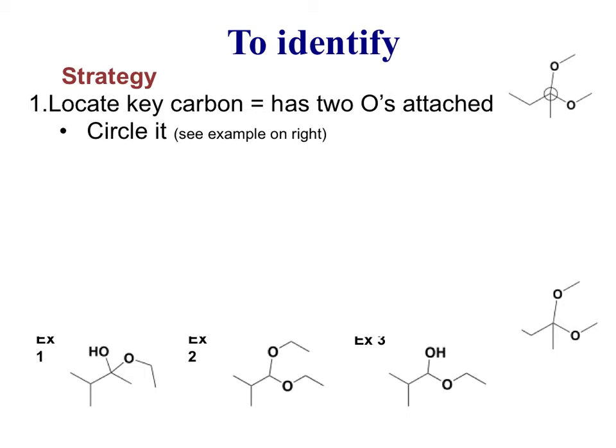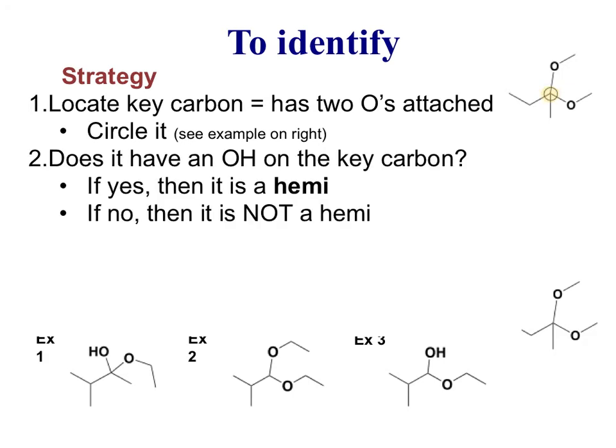This is the basic strategy. First you're going to locate the key carbon, the carbon that has two O's attached. If I'm looking at the example on the right it's already circled. That's the key carbon because it's got two oxygens attached. Next you're going to ask: does this molecule have an OH on the key carbon? If yes then it's a hemi something, either hemiacetal or hemiketal. If not then it's a full of whatever that is, either acetal or ketal. If I look at this molecule on the right the answer would be no it doesn't, so then it's not a hemi.